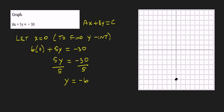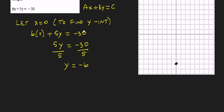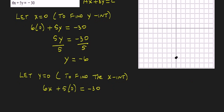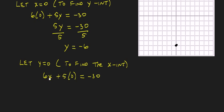And now we find the x-intercept, and we do that by letting y equal 0. Again, that's to find the x-intercept. And so we have the equation 6x plus 5 times 0, replacing y with 0, equals negative 30. And so this becomes 6x equals negative 30.